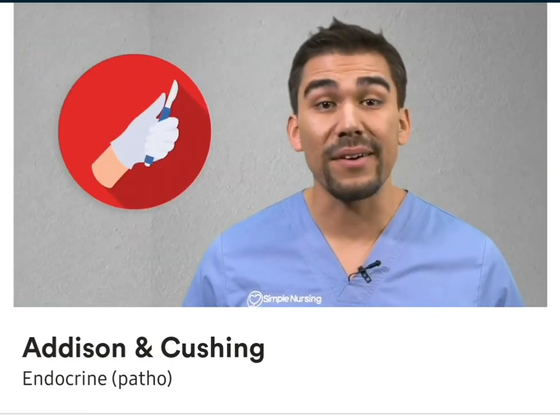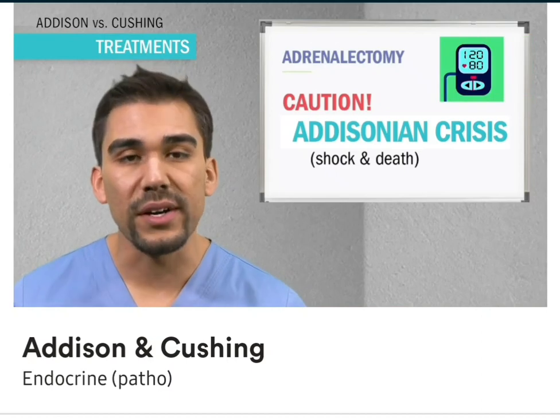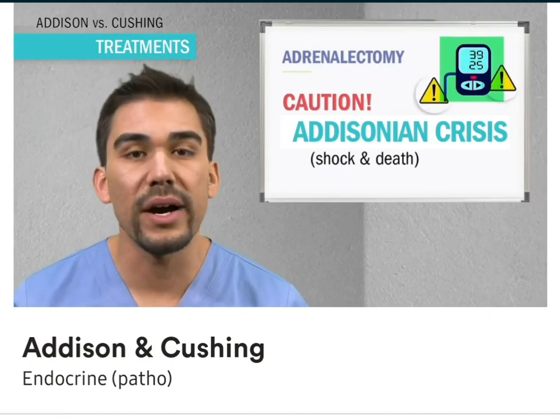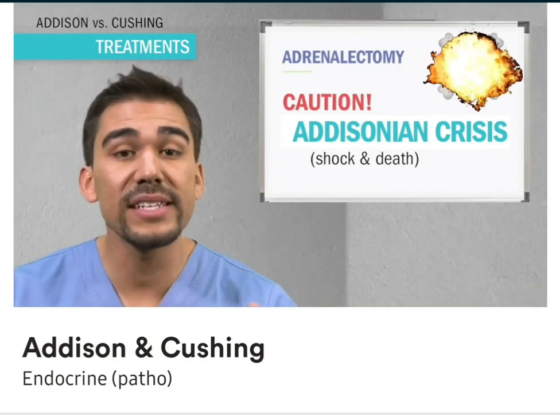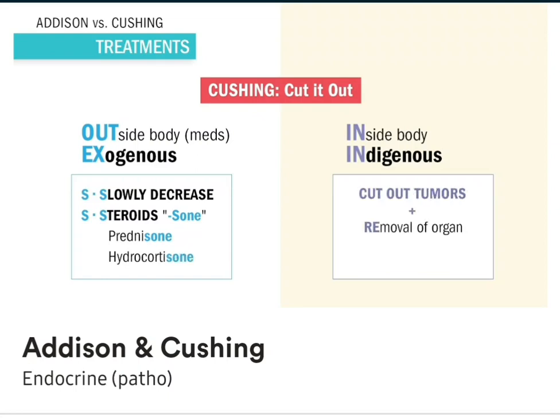Now, how do you treat Cushing's? Well, we simply cut out the tumors or the steroids causing the problem. But cutting off an adrenal or pituitary, or even suddenly stopping steroids, can lead to Addisonian crisis — blood pressure so low it can kill the patient. We always slowly decrease or taper off steroids ending in -zone. And if we cut off tumors, remember — if we remove any endocrine gland, we have to replace those hormones. Key word: lifelong hormone replacement therapy. With no cure, we're just managing it with meds. When a question comes up on the NCLEX stating 'what statement made by the patient requires additional teaching after adrenalectomy?' — key word: lifelong hormone replacement therapy. Never stop those hormones — it will lead to Addisonian adrenal crisis.